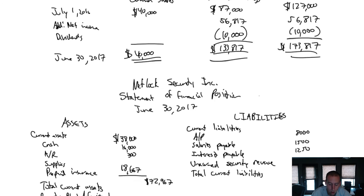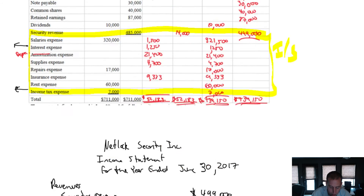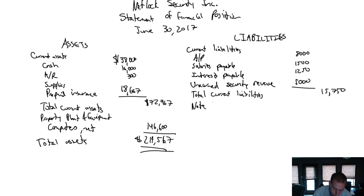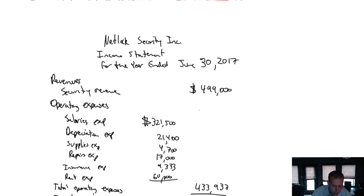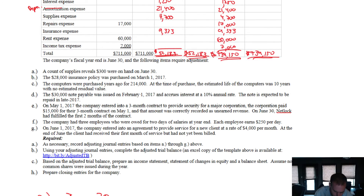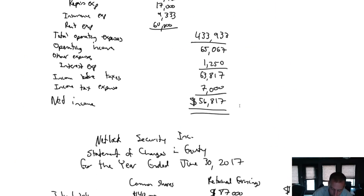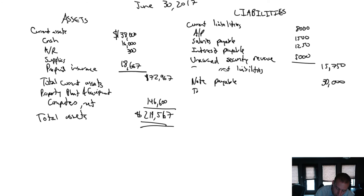In terms of long-term liabilities, we have the note payable of 30,000. Actually, wait — I want to take a step back. That note payable was dated February 1st and is expected to be repaid in late 2017. This isn't long-term at all — this is a current liability. We're expecting to pay it back within the year. I apologize; if you wrote that down you'll need to scratch it out. Our note payable is current.